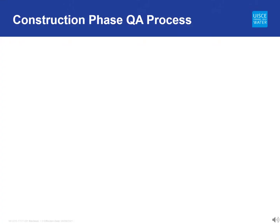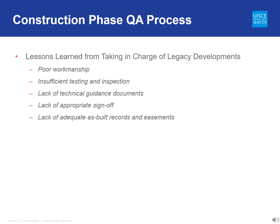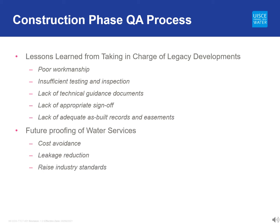The Irish Water Quality Assurance Process covers both design and construction. It was developed from lessons learned from the taking-in-charge process for legacy developments, particularly relating to poor workmanship during construction, insufficient testing and inspection, a lack of technical guidance documents, appropriate sign-off at completion stage, and the provision of adequate as-built records and easements where required. The process will help future-proof water services by using best practices from around the world, helping ensure cost avoidance, leakage reduction, and raised industry standards and site workmanship. We can only do this by working in collaboration with all stakeholders, particularly developers and the construction industry.